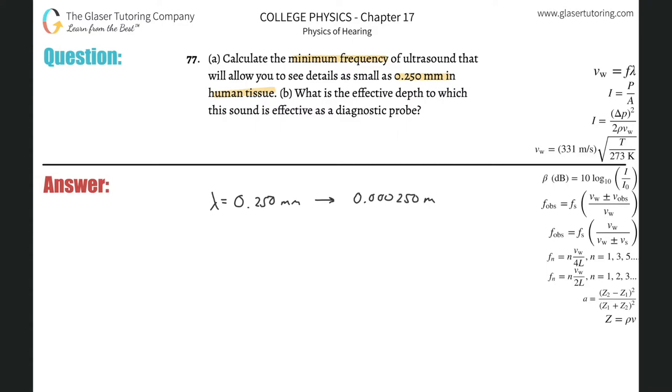You can convert that into scientific notation. That would be one, two, three, four, so this would be 2.5 times 10 to the minus fourth meters. That's basically the wavelength.